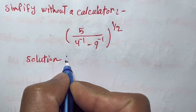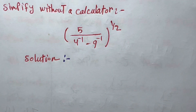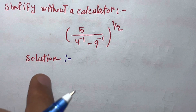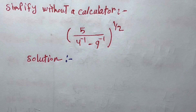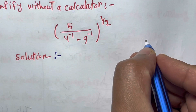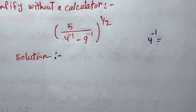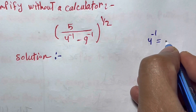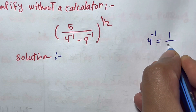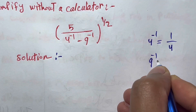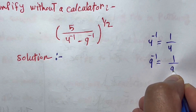The first step you need to think about is rewriting negative exponents as positive. For example, four to the power of minus one — if you want to write this as a positive exponent, you flip it: it becomes one over four. Similarly, nine to the power of minus one becomes one over nine.